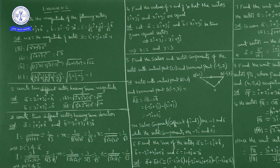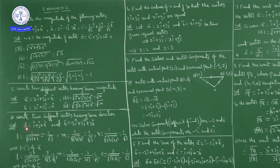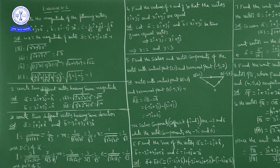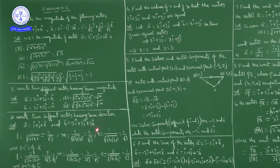For two vectors having the same direction, consider a̅ = î + ĵ + k̂. To get another vector in the same direction, simply write b̅ as a scalar multiple of a̅, for example b̅ = 2î + 2ĵ + 2k̂ or 3î + 3ĵ + 3k̂.